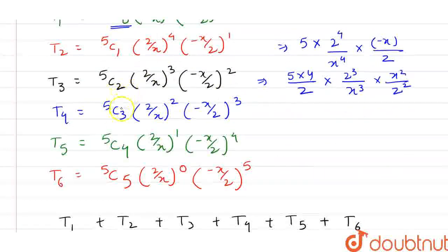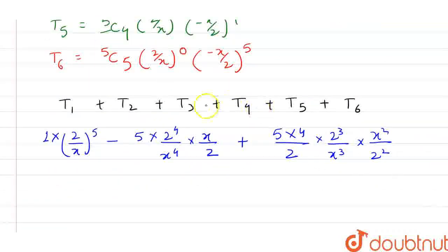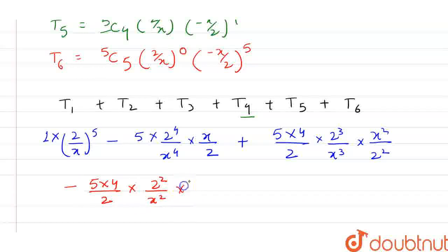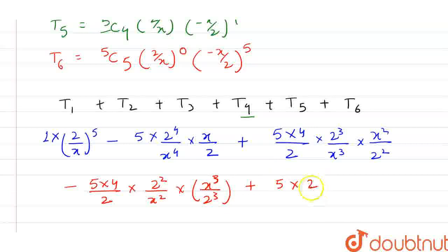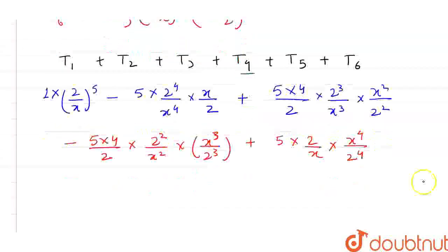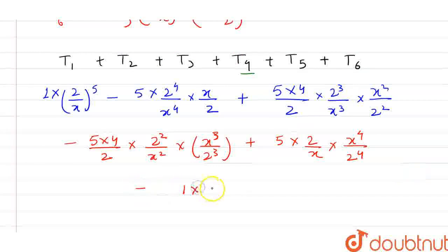Applying the formula nCr = nC(n−r): 5C3 equals 5C2, 5C4 equals 5C1, and 5C5 equals 5C0. So T4 can be written as minus (5×4/2) times (2²/x²) times (x³/y⁶). T5 is minus (2^4/y^4) times (x^4/y^8). T6 is minus 1 times (x^5/y^10), which is −x^5/2^5.